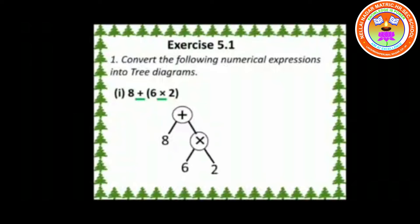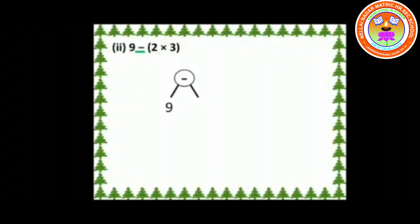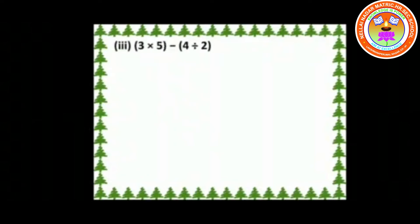Second one: 9 − 2 × 3. Here the symbol minus is the node and its leaf is 9. Then the symbol × is the branch and 2 and 3 are the leaves. Third one: 3 × 5 − 4 ÷ 2.